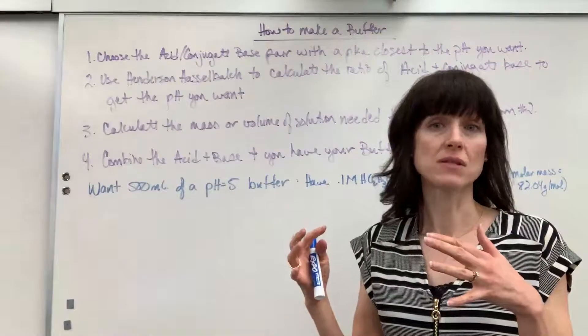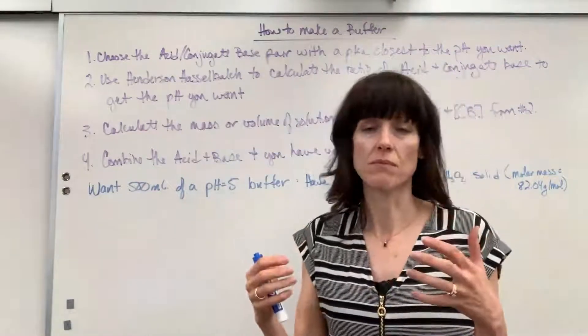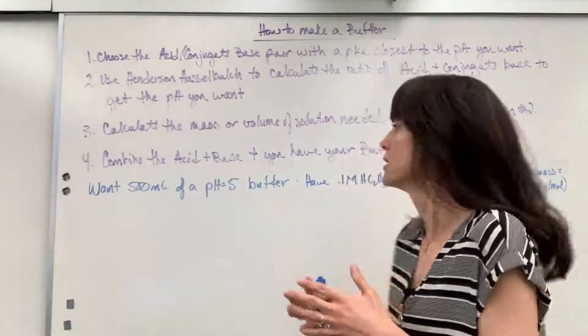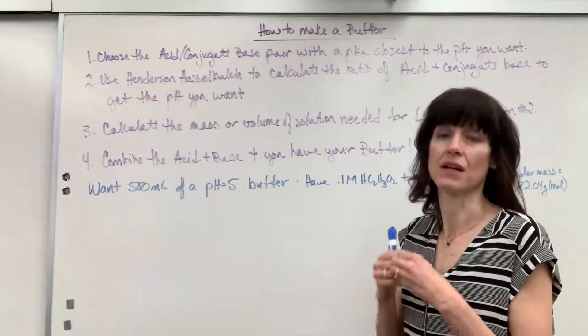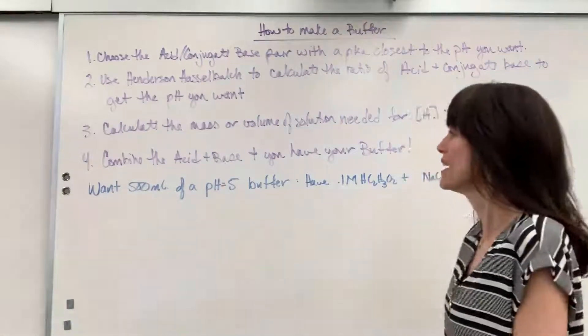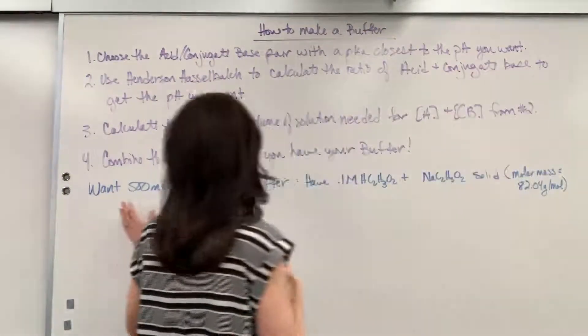And then lastly, once you have the amounts, you just measure out the volume or the masses, put them together, and you are going to have your acid conjugate base pair together in a buffer. All right, so here's my example.